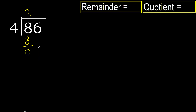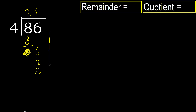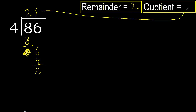Next, bring down the 6. 4 multiplied by 2 is 8, which is greater. 4 multiplied by 1 is 4. 6 minus 4 is 2. There is no next number, so we finish. The answer is 21 remainder 2.